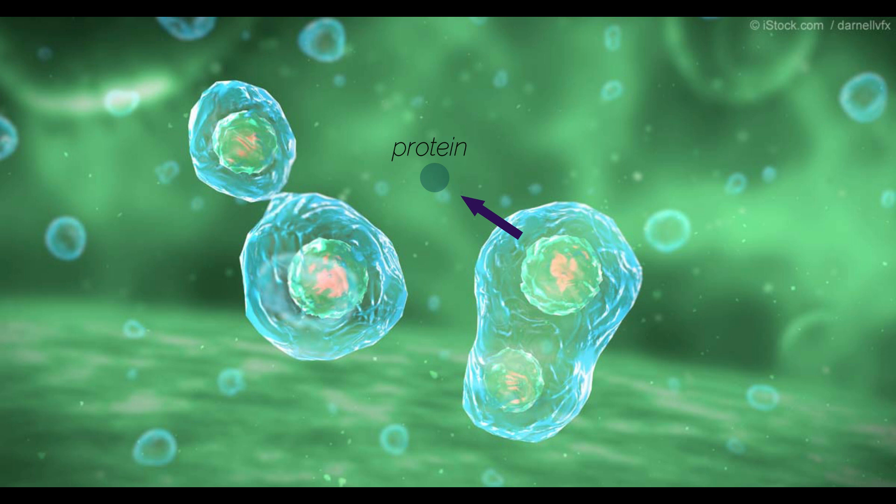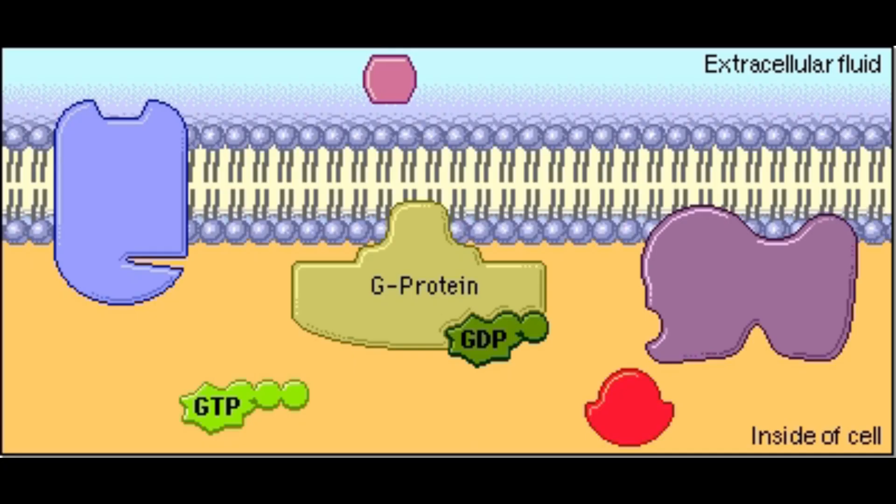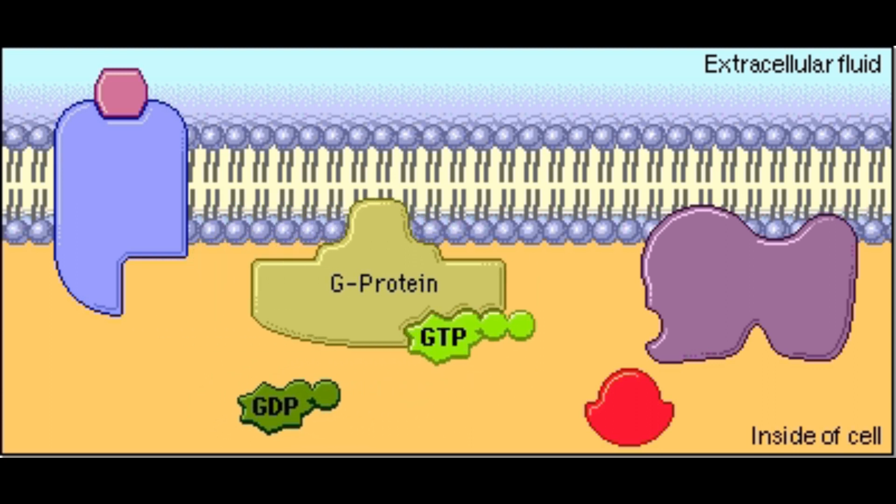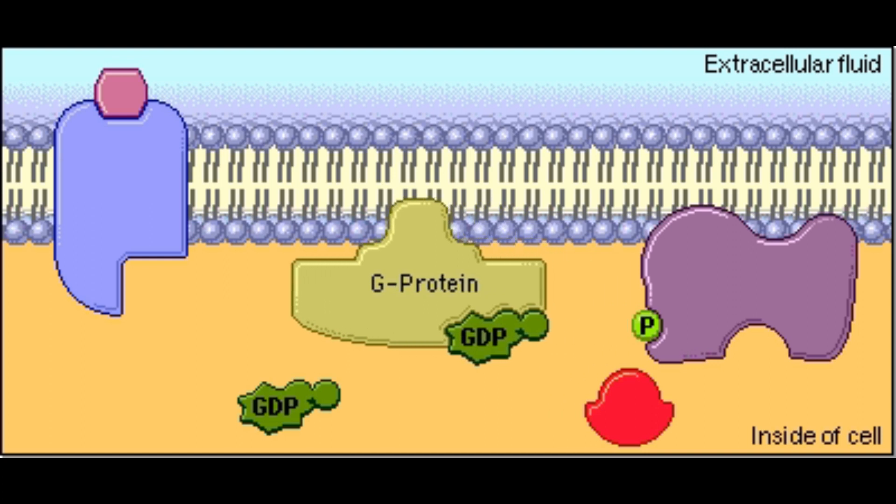Pretty cool, right? So, the secretory pathway is the behind-the-scenes of what triggers cellular pathways. Once this protein that has been sent out of the cell reaches the surface of another cell and binds to its receptor, it'll start the sequence of events I talked about earlier. This sequence of events is called a cellular pathway, and a bunch of different proteins are involved in different pathways, which is why proteins are so varied. They do everything in the cell.